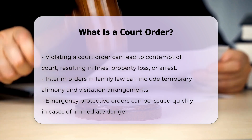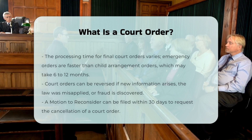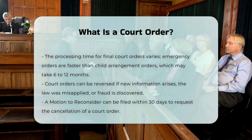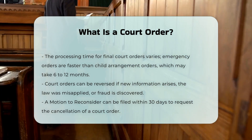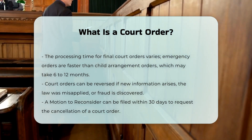Processing time. The time it takes to secure a final court order varies depending on the complexity of the case and the amount of evidence required. For example, emergency protection orders can be made quickly, while child arrangement orders can take between 6 to 12 months.